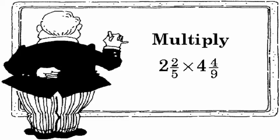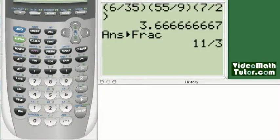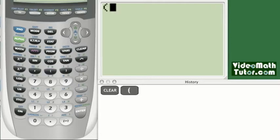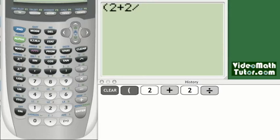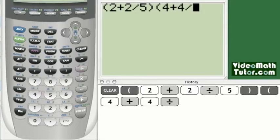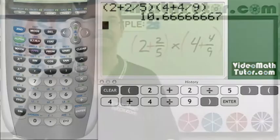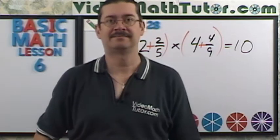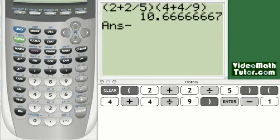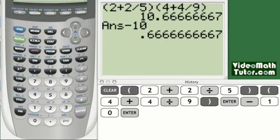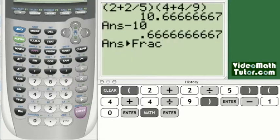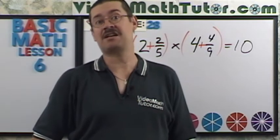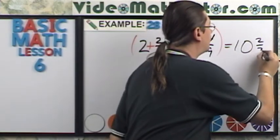Multiply two and two-fifths times four and four-ninths. Press clear. Open parentheses. 2 plus 2 divided by 5. Close parentheses. Open them again. 4 plus 4 divided by 9. Close parentheses. Enter. So let's just write down the ten. Equals ten. Subtract ten. And now let's make this a fraction. Now let's just tack on the two-thirds. Two-thirds. And we're done.